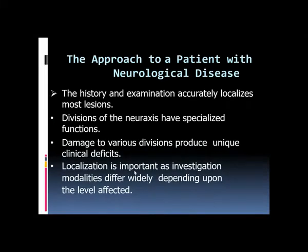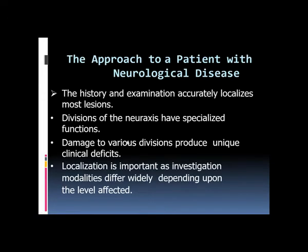Wrong localization leads to unnecessary investigations. For example, a patient needing nerve conduction studies for neuropathy may instead be advised to undergo MRI of the lumbosacral or cervical spine. This is why correct localization is critical in neurology.